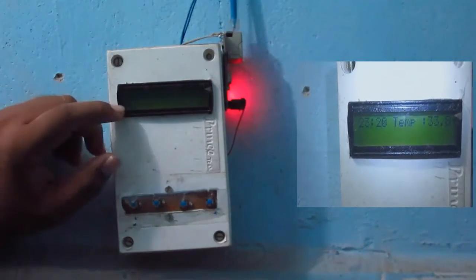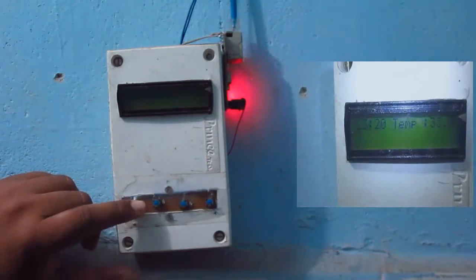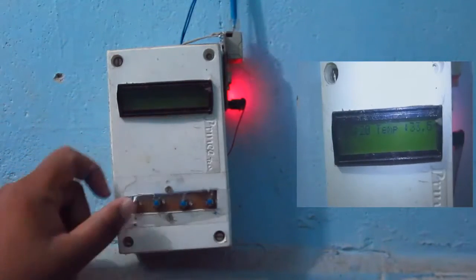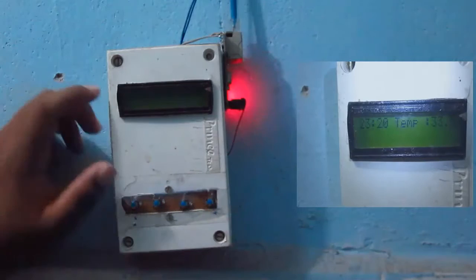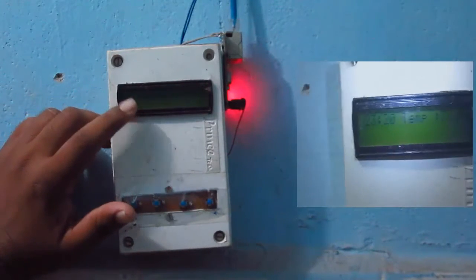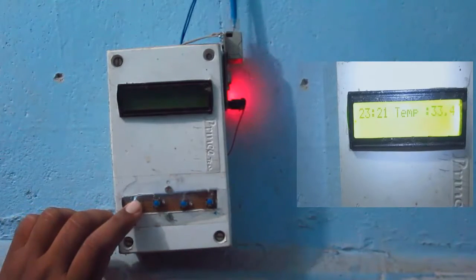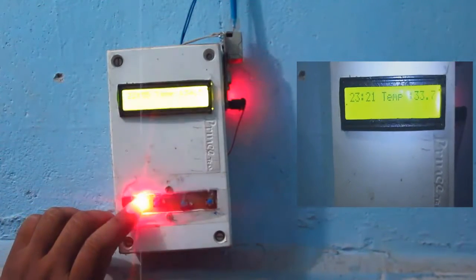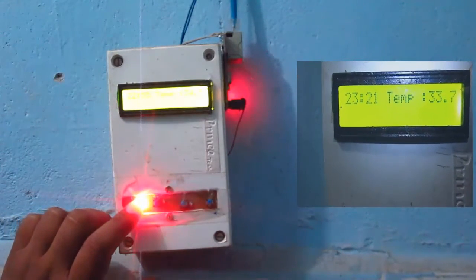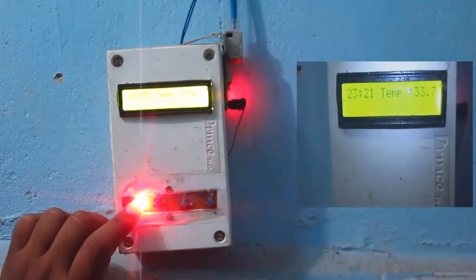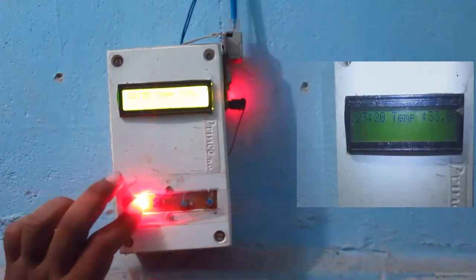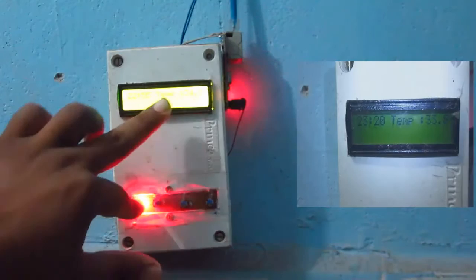So basically the LCD shows the current time and the bathroom temperature. By default the LED of the LCD module is off. So to see, you can just press any button. It switches on the background LED of the LCD and now you can see it's showing the current time and the temperature.